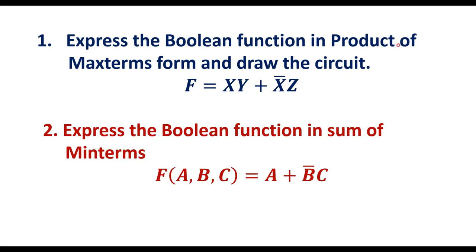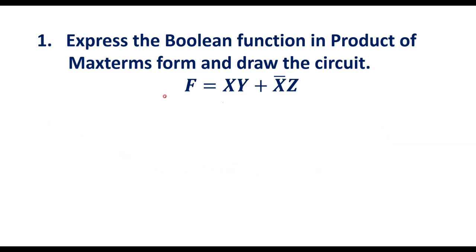Express the boolean function in product of maxterm form and draw the circuit. The function f is given as f = xy + x̄z. We need to convert this function into product of maxterm form and draw the circuit. The second problem is to express a boolean function in sum of minterms. Let me consider the first function first: f = xy + x̄z.